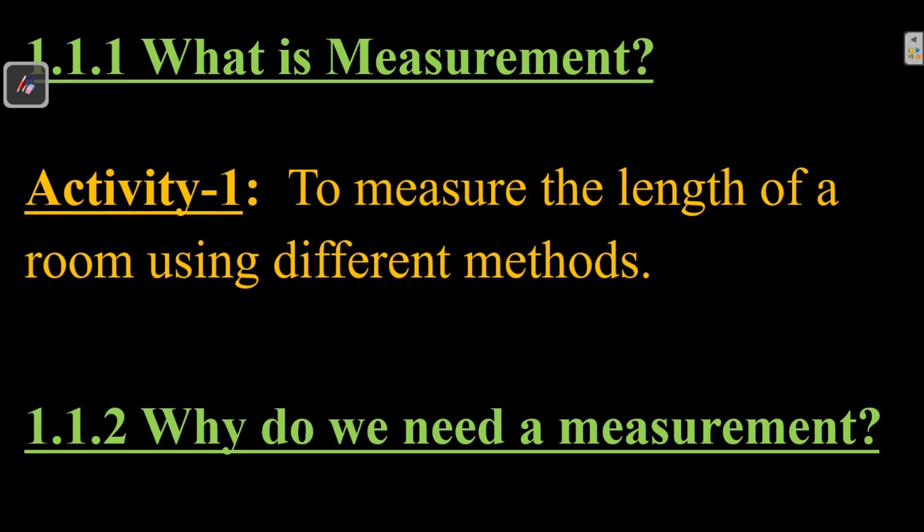These instruments have known values — they are calibrated in known values. The unknown values, such as the length of a wood piece or the length of a room, are compared with these known values. That comparison is measurement. The measurement involves a comparison between the unknown measured quantity and something known that we can refer to.